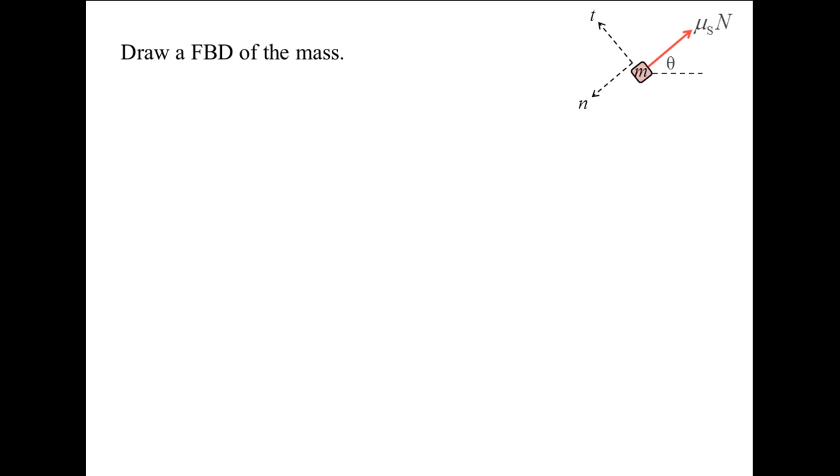The friction force opposes the motion of the block and is oriented at angle theta from the horizontal. Since the block starts from rest, the magnitude of the friction force is the coefficient of static friction times the normal force n. The block's weight points downward and has the magnitude of m times g, the gravitational acceleration constant. And the normal force acting on the block is oriented at angle theta from the vertical and has the magnitude n.